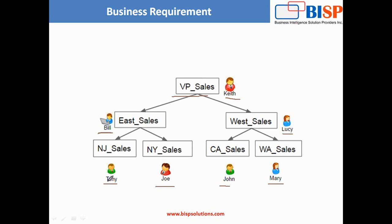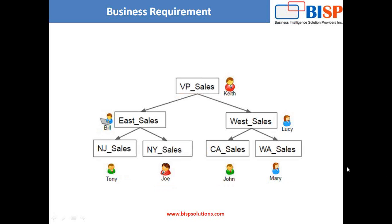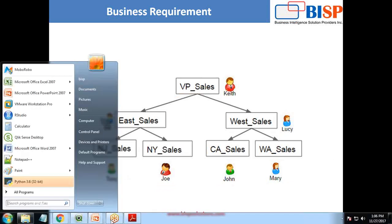The business requirement is: when Bill logs in, he will be able to see his own records and all the records generated by his subordinates Tony and Joy. In the same manner, when Lucy logs in, she would be able to access records owned by her or her subordinates John and Mary. When Tony logs in, Tony will be able to access only his own records because there are no subordinates for Tony. When Keith logs in, he would be able to see all records - his own as well as Bill's and Bill's subordinates.